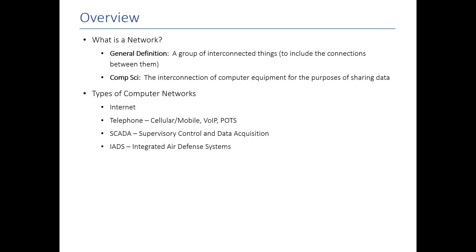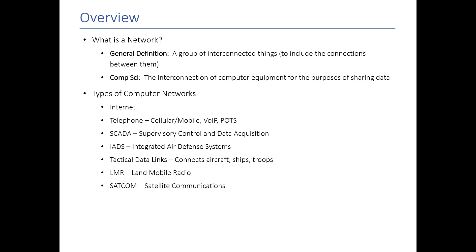IADs are networks that control air defense systems, things like SAM sites. Tactical data links are networks that connect troops on the battlefield — soldiers communicating with aircraft, with ships, with command. LMR is a network for land radios, and SATCOM is obviously just for satellite communications. It's easy to think of computer networks as just the internet, and for a lot of this lecture we will focus on the internet. But it's important to remember that networks is a much broader term and it encompasses a lot more areas.